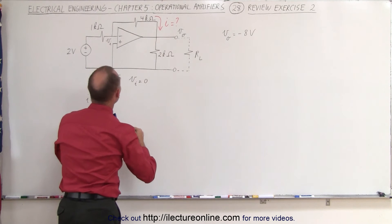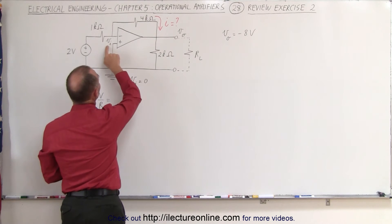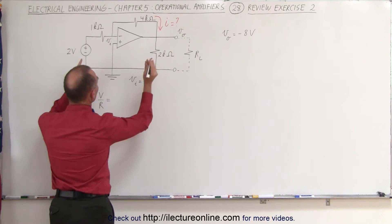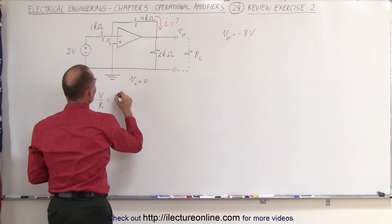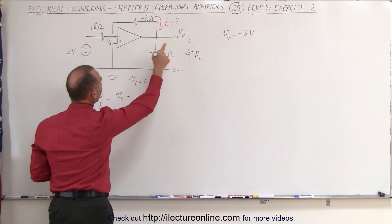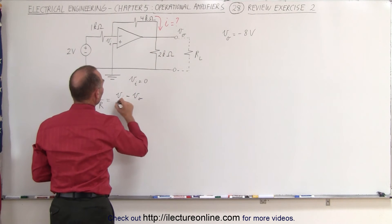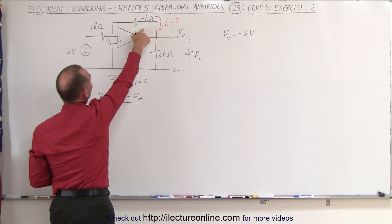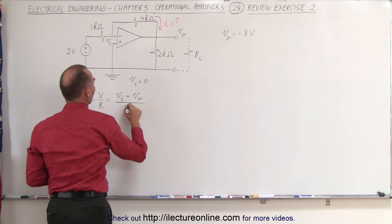And therefore the voltage difference between V sub i and V sub O can be written as follows. We can say that the voltage there would be the voltage at V sub i minus the voltage at the output and we divide that by the resistance between those two which is the feedback resistor which is R sub f.